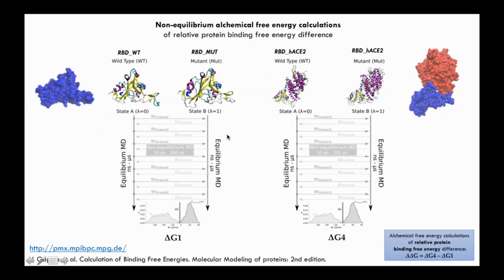In our workflow we compute ΔG1 and ΔG4 by first running four equilibrium molecular dynamics simulations: RBD wild type, RBD with mutations, complex RBD–ACE2 wild type, and complex RBD–ACE2 with mutations — ranging from nanoseconds to microseconds. We then extract 500 snapshot structures and compute thermodynamic integrations (forward and reverse), yielding 1000 short MD simulations of 10–200 picoseconds, performed for both the monomeric and complex structures to obtain the two ΔG values.